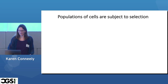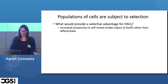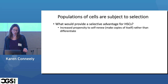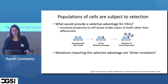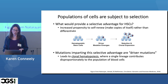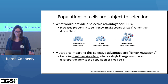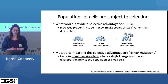Like any population, these populations of cells are subject to selection. One thing that would provide a selective advantage for hematopoietic stem cells is an increased propensity to self-renew rather than differentiate. If a cell acquires a driver mutation that allows it to make lots of copies of itself, you might imagine that it becomes a disproportionate part of your blood — essentially a clone. When clonality happens in blood at the hematopoietic stem cell level, it's called clonal hematopoiesis, where a single lineage contributes disproportionately to the population of blood cells.